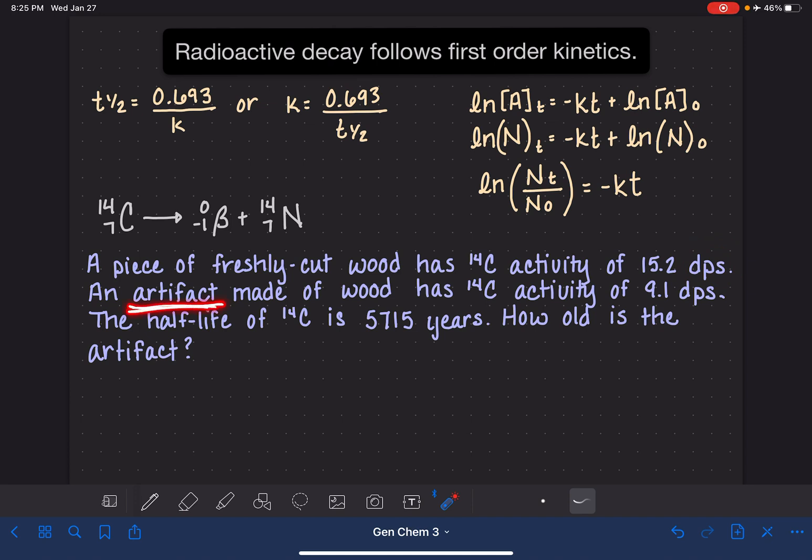An artifact, so that means an old object that is made of wood, has a carbon-14 activity of 9.1 DPS, disintegrations per second. And the half-life of carbon-14 is 5,715 years. So let's calculate how old is that artifact.